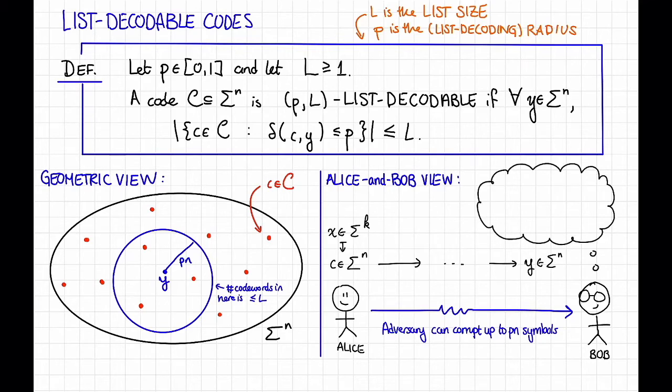That is, Bob is supposed to recover a list curly L, which is equal to x1, x2, dot dot dot, up to x capital L, so that Alice's true message X is in curly L.